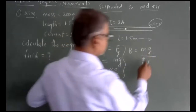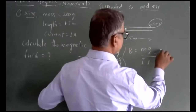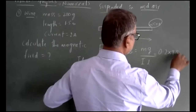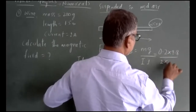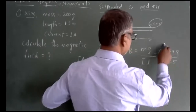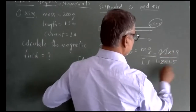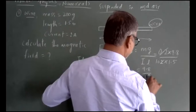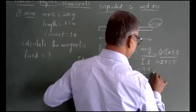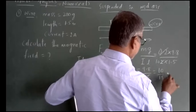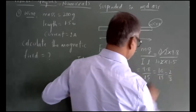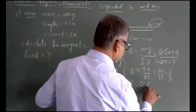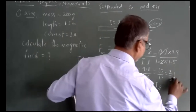Magnetic field is given by B = MG / (I×L). Substituting values: mass is 200 gram = 0.2 kg, gravity is 9.8, current is 2 ampere, length is 1.5 meter. So B = (0.2 × 9.8) / (2 × 1.5) = 9.8 / 15, which is approximately 10/15 = 2/3 ≈ 0.67 Tesla.